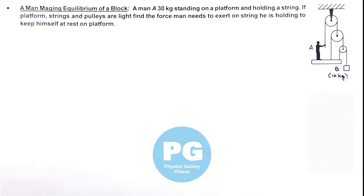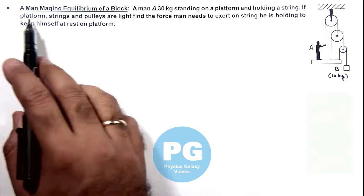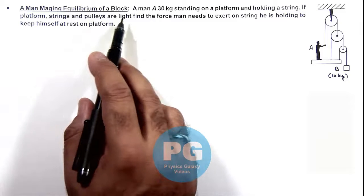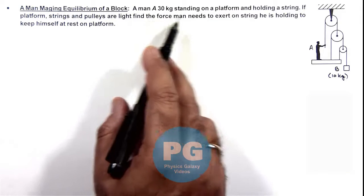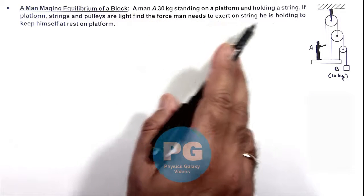In this illustration we'll discuss a situation when a man is managing equilibrium of a block. Here a man of mass 30 kg is standing on a platform and holding a string.